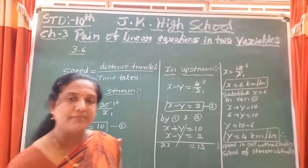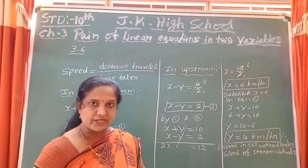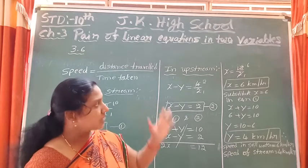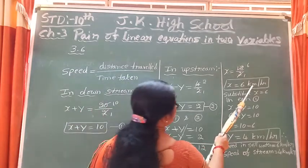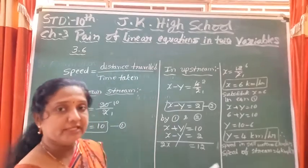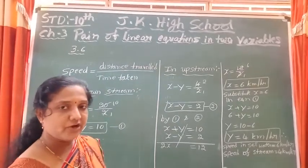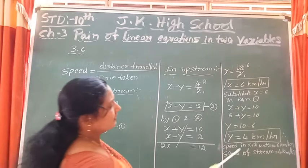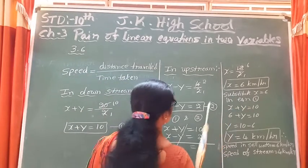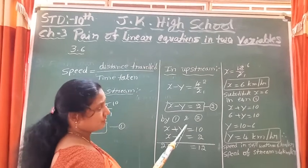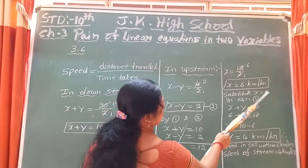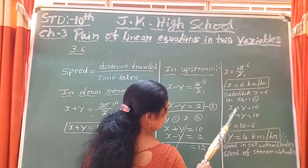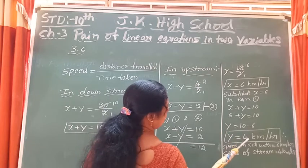x equals 6 km per hour means the speed of Ritu in still water is 6 km per hour. After getting x, substitute x equals 6 in equation number 1. Then 6 plus y equals 10, giving y equals 4 km per hour.